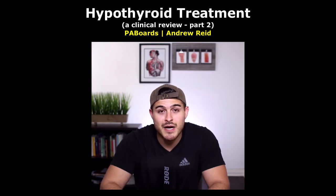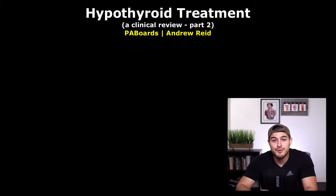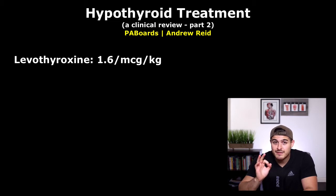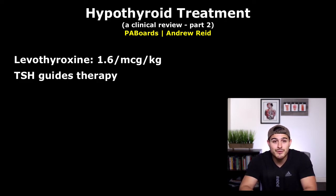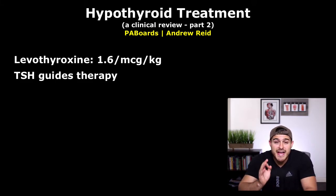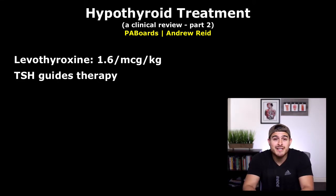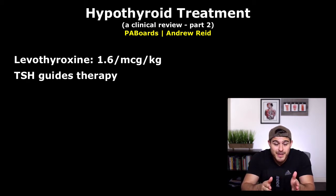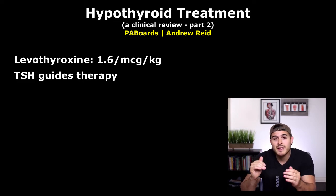Today we're starting with treatment of hypothyroidism — the different options and how to manage. Treatment is fairly simple: we give levothyroxine until we reach a euthyroid state. What guides our therapy is the TSH. Most laboratories have an upper limit of normal of five, however most experts agree that a TSH of three is the ideal target, because the majority of euthyroid patients without hypothyroidism have a TSH of around two.